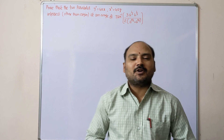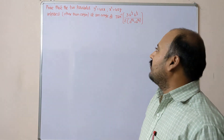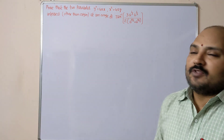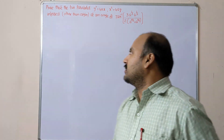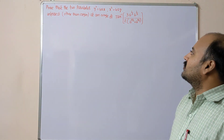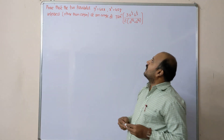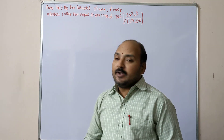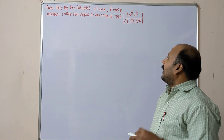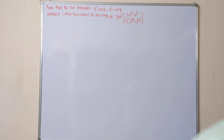Hello students, welcome to our channel Maths with Panindra. In this video we are going to discuss about parabola — one of the example problems which is very important for seven marks. The question is: prove that the two parabolas y² = 4ax and x² = 4by intersect other than the origin at an angle of tan inverse of 3·a^(1/3)·b^(1/3) divided by 2(a^(2/3) + b^(2/3)).